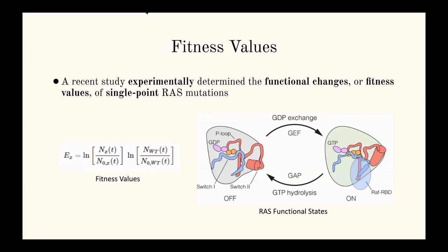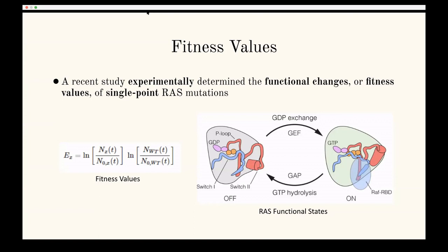A recent study experimentally determined functional changes — also known as fitness values — of mutations to RAS. One of the central dogmas of protein biology is that structure determines function: the way a protein is structured greatly affects its specific functional capabilities. This is the backbone of a lot of biology, because proteins have many complex functions which are essential in the human body.